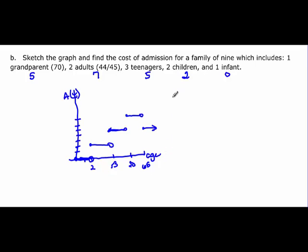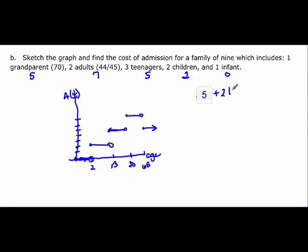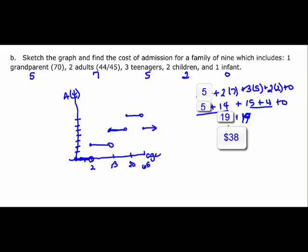Now to figure out what we have to evaluate, we have five, plus we have two adults, which is two times seven, plus three teenagers, which is three times five, plus two children, which is two times two, and then the one infant is zero. $38 for that family to get in.